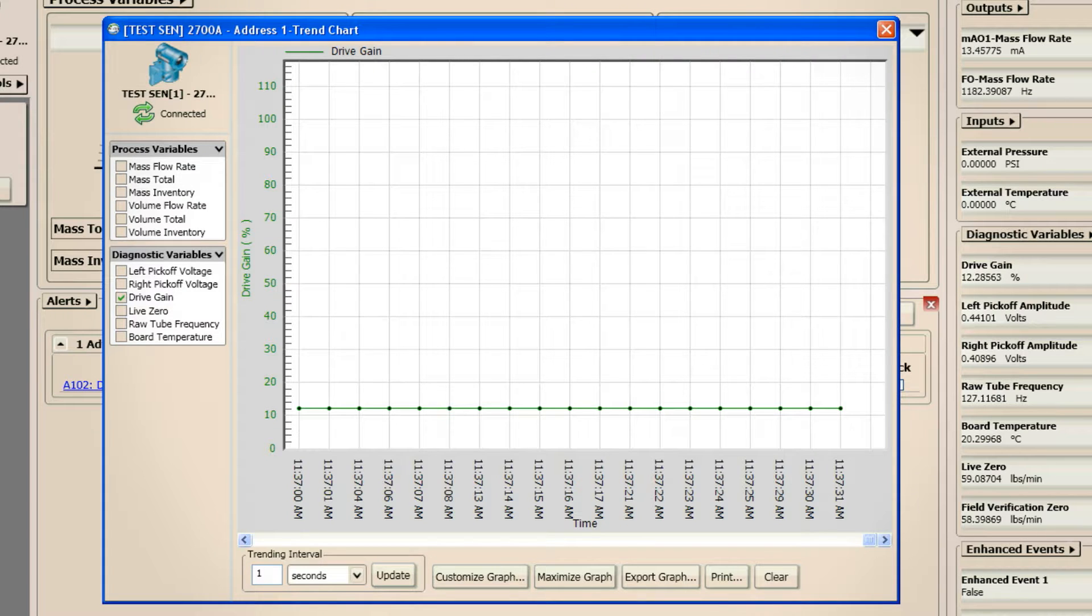In a liquid-only application, drive gain is low and steady, maybe around 5 to 12 percent, and steady for that application. But when gas is entrained, there is much more flow noise and damping on the flow tubes and therefore, drive gain usually goes up to 100 percent.